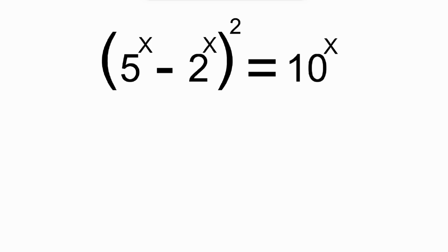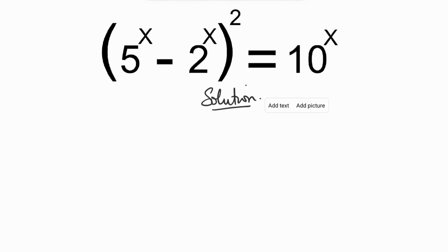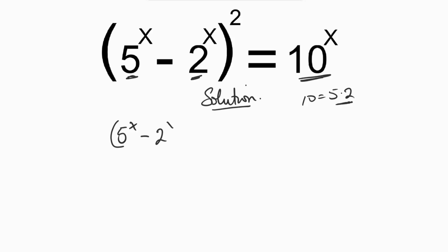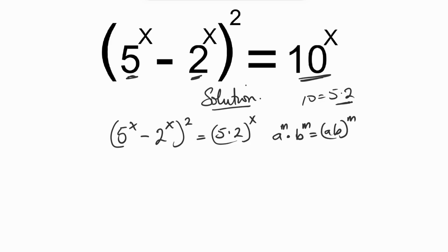We're going to start by rewriting the right-hand side. We know that 10 is the same thing as 5 times 2, and this 5 times 2 corresponds to the 5 and the 2 we have in the parenthesis. We recall that a^m · b^m equals (ab)^m — similar powers mean the bases can multiply.